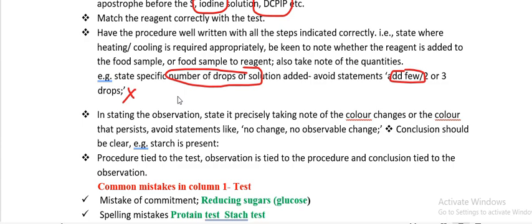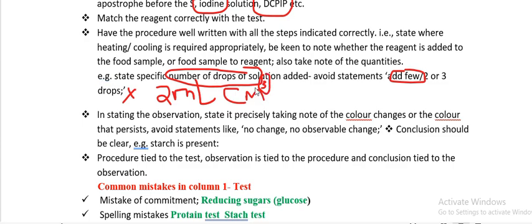You can express volumes in millilitres (ml) or centimetres cubed (cm³) — both are for volume. Be very careful not to forget the '3' in cm³, and don't forget the 'L' in ml, otherwise '2 ml' becomes '2 m,' which is wrong.